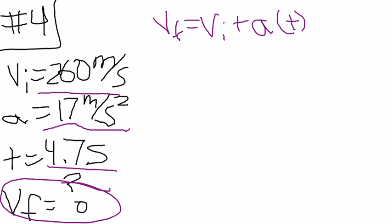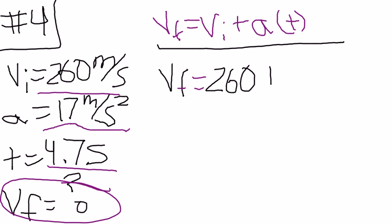you use the equation: final velocity equals initial velocity plus acceleration times time. Writing in your givens, initial velocity is 260 meters per second, plus acceleration of 17 meters per second squared times 4.7 seconds.